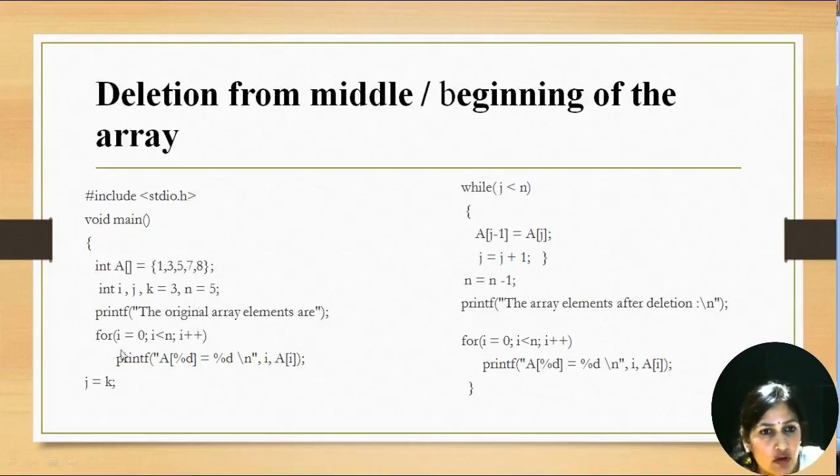First of all we have shown the original array. Then we assign k that is 3 to j. Because k is the index from where we want to delete the value. This loop will remain continue until the value of j reaches n.